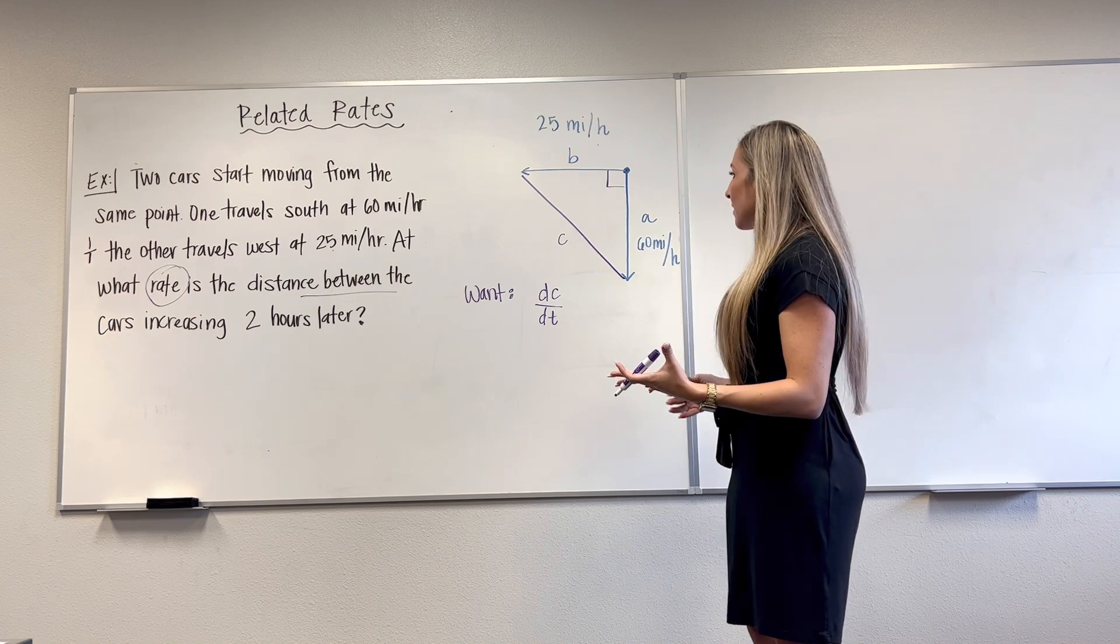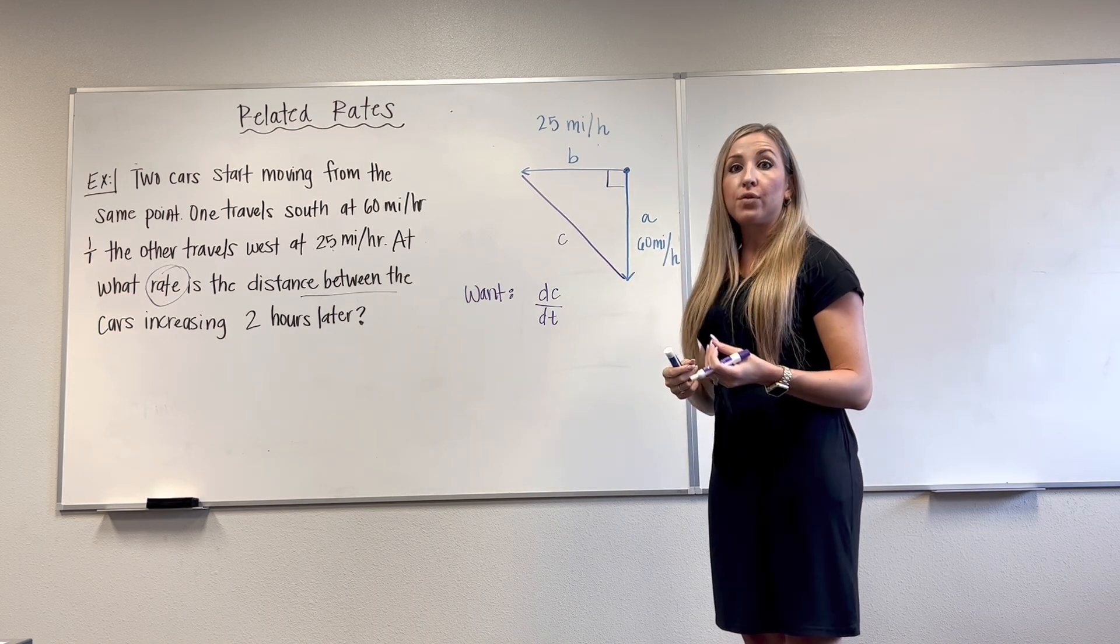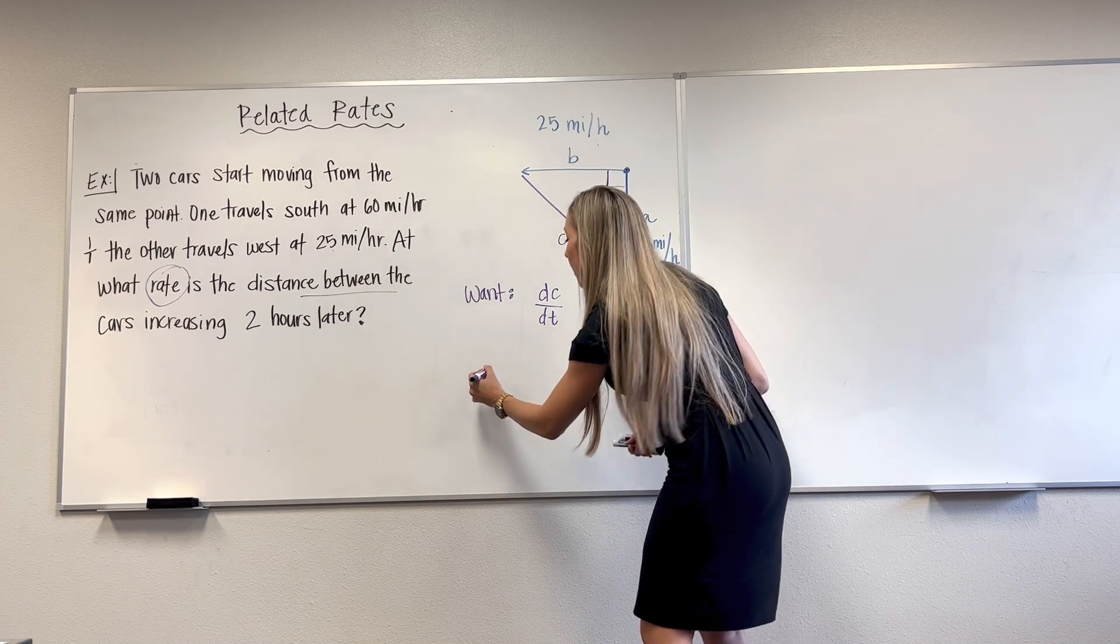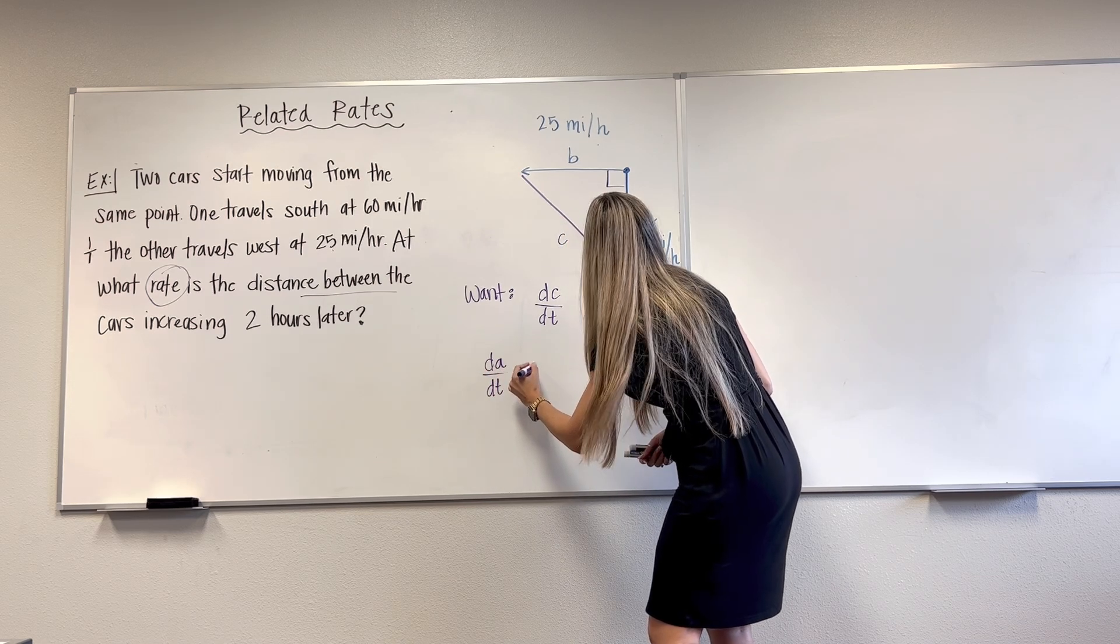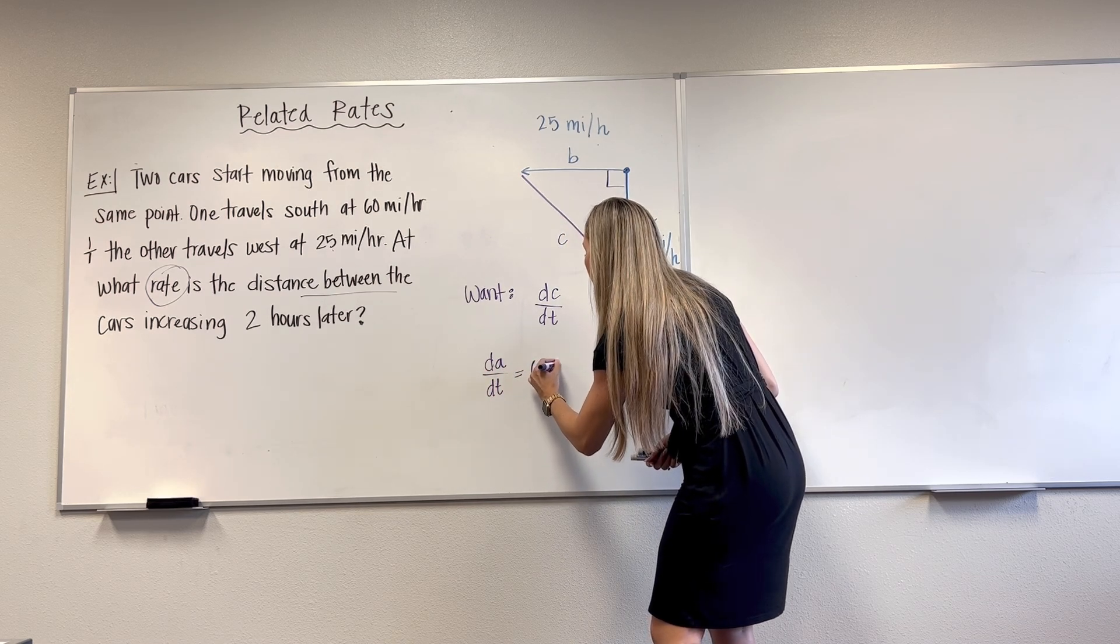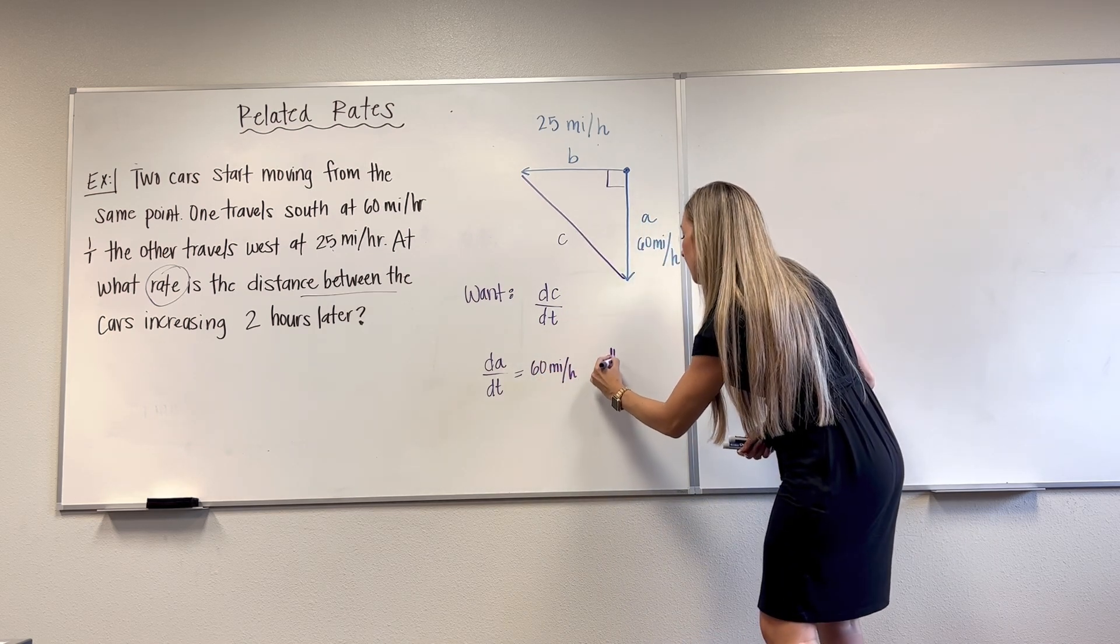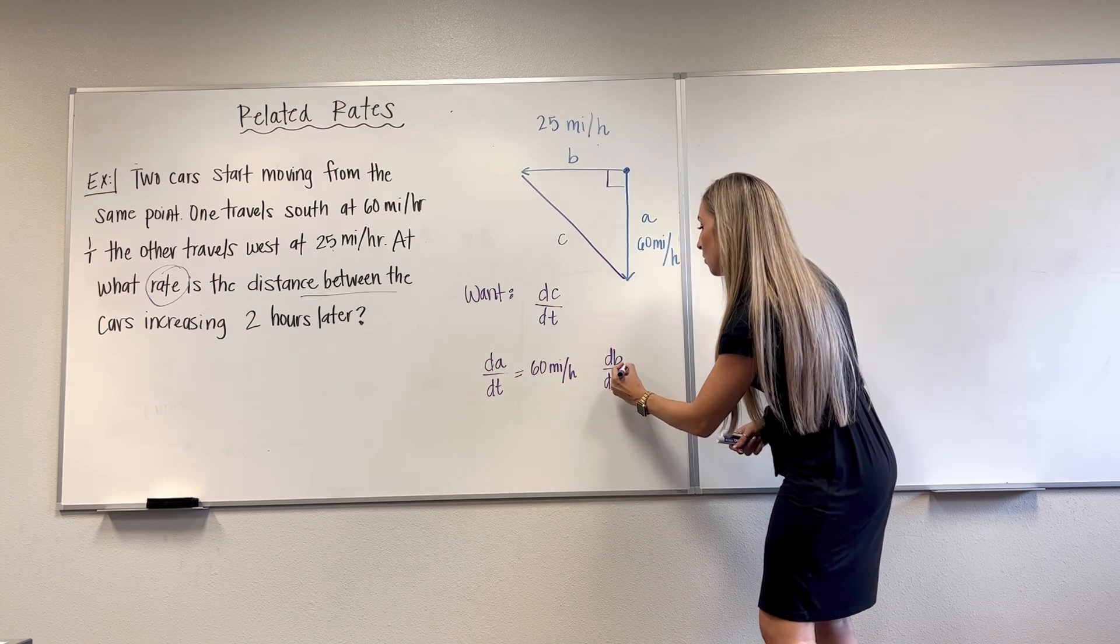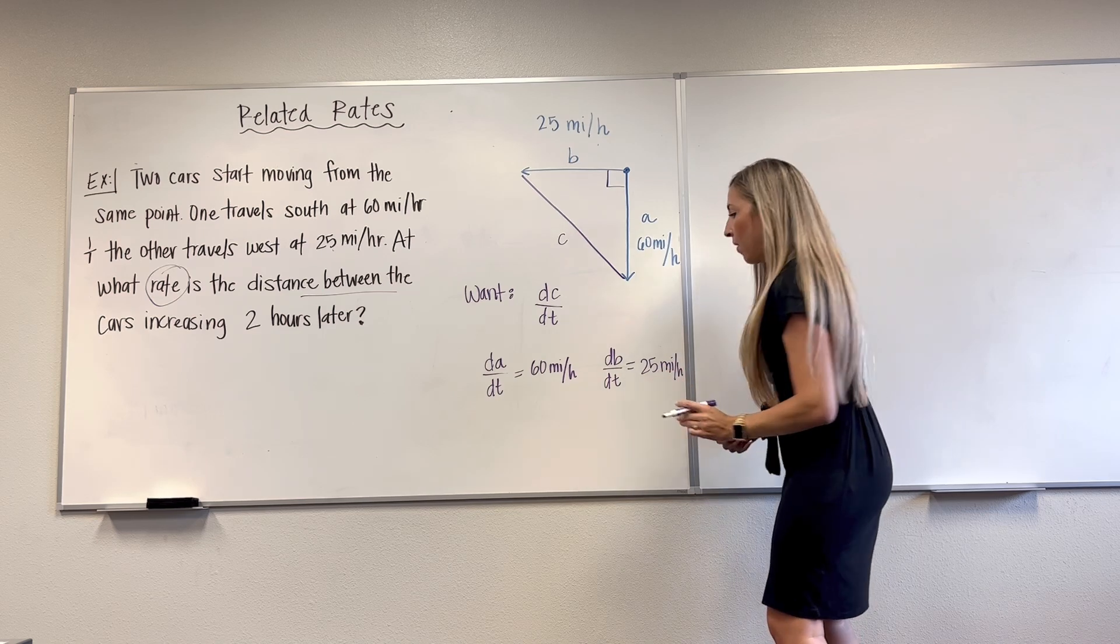Now, what did they give us? This 60 miles per hour is the rate of change of this distance A, that car A is traveling. So we have that dA/dt is equal to 60 miles per hour. And also, dB/dt, that's the rate of change of the distance that car B travels is 25 miles per hour.